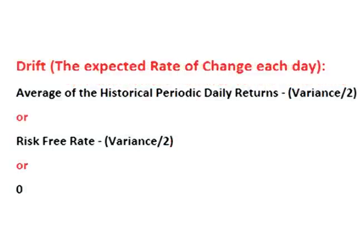There are two other main theories for the asset's expected daily rate of change or drift. One theory is that the drift will be the risk-free rate eroded by volatility — the risk-free rate being the rate one can get on a fixed-income, risk-free asset such as a government bond, supported by the no riskless arbitrage argument. The other main theory is that the expected daily rate of change or drift should be zero, supported by the random walk theory.